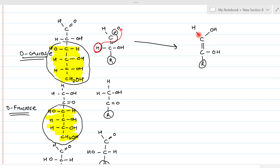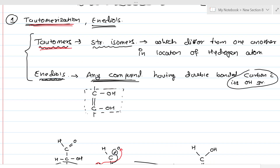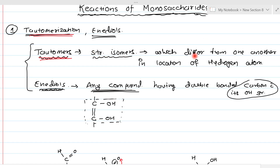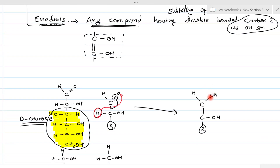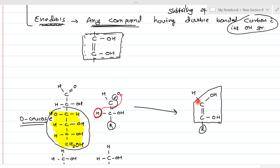As per our definition, tautomers are structural isomers differing in the location of a hydrogen atom. Once the hydrogen atom's location is shifted, a second phenomenon is also seen — the shifting of the double bond. If you examine this resulting structure carefully, it should look familiar: it matches the definition of an enediol — a compound having such a double-bonded di-hydroxyl carbon structure within it. So this product is the enediol compound.